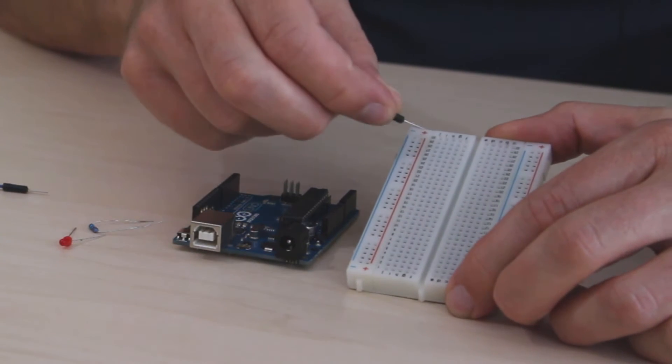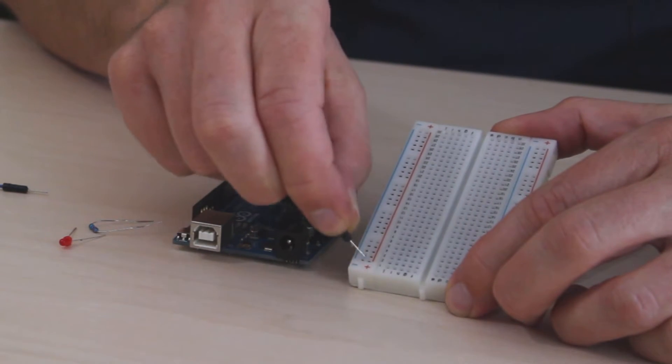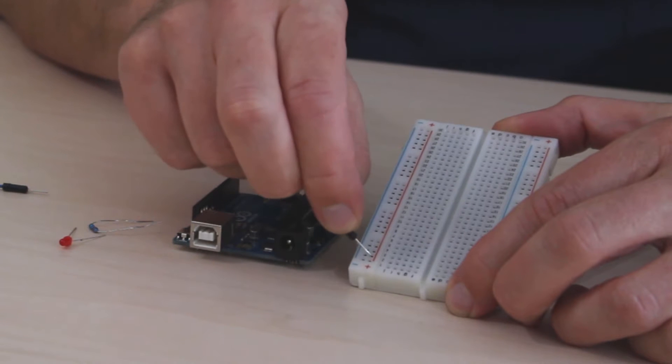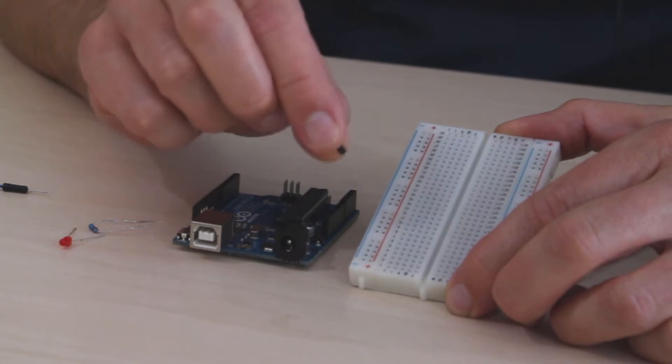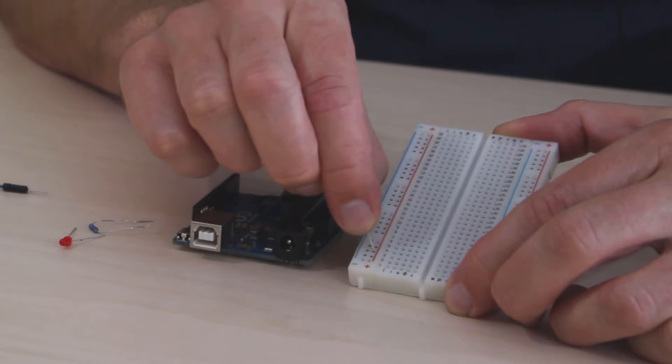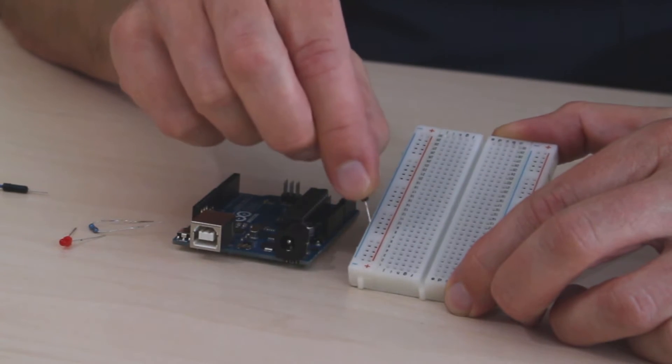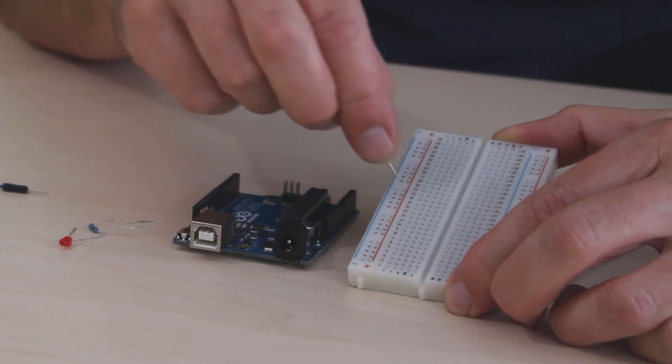So when I say power rail, I'm talking about these contact points next to the red and the blue lines. And if this is the first time you're using a breadboard, all these contact points next to the red and the blue lines are interconnected.